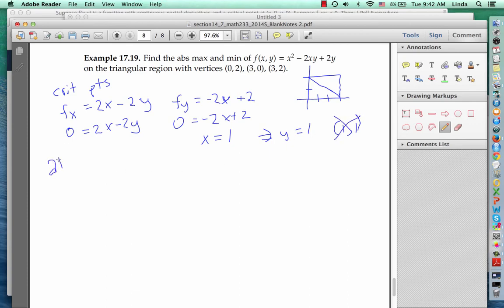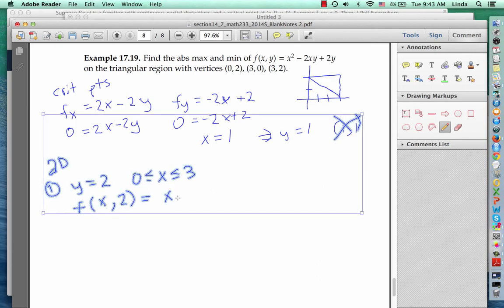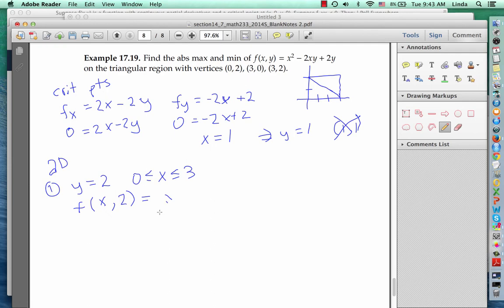Next, let's check the boundary of d. Let's start with the top edge, where y equals 2, and x is in between 0 and 3. So we're looking at points of the form f of x, 2, which, plugging in to our equation for f, that gives us x squared minus 4x plus 4.